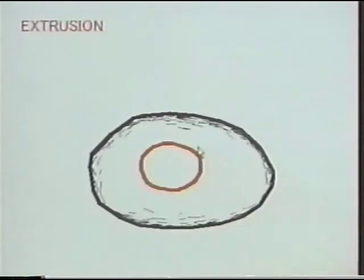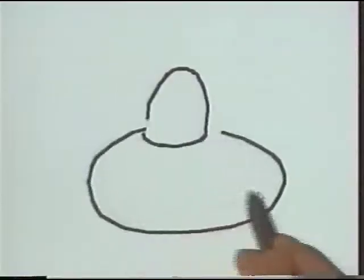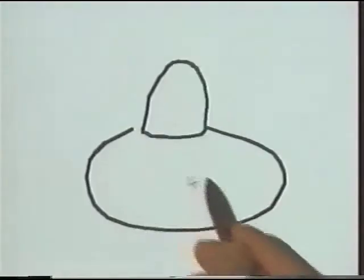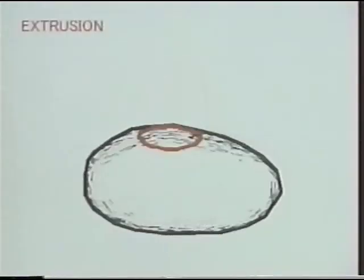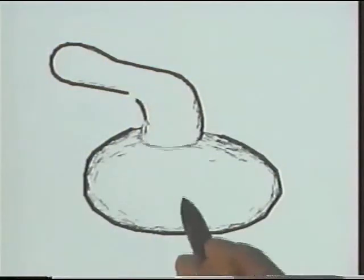Extrusion is a two-stroke operation. You first draw a closed stroke on the surface and then draw an extruding stroke. This is basically a sweep operation.